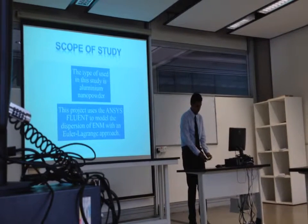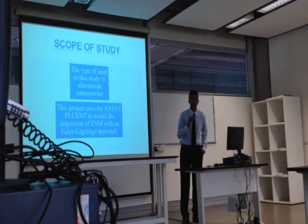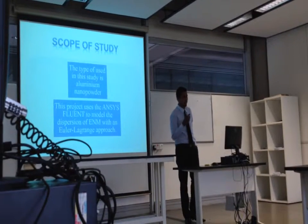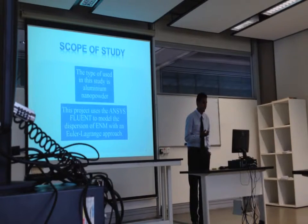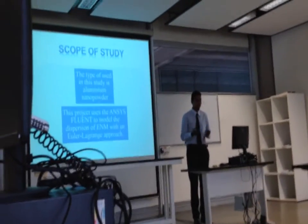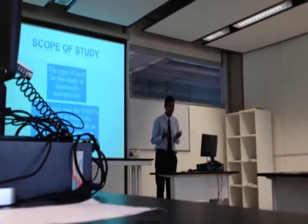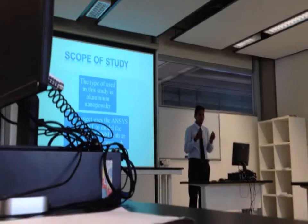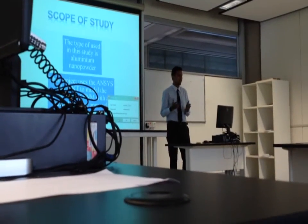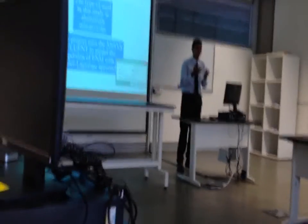For the scope of study, I'm using aluminium nanoparticles because aluminium is a common material used in industry and it's also one of the materials that can cause explosions. The project uses ANSYS Fluent to model the dispersion using an Eulerian-Lagrangian approach. The Eulerian approach sets a boundary and monitors the movement of material inside that boundary, while the Lagrangian approach monitors the movement of specific particles. We combine both approaches.